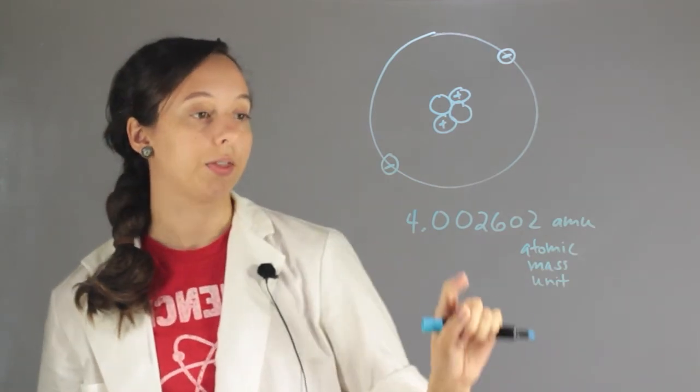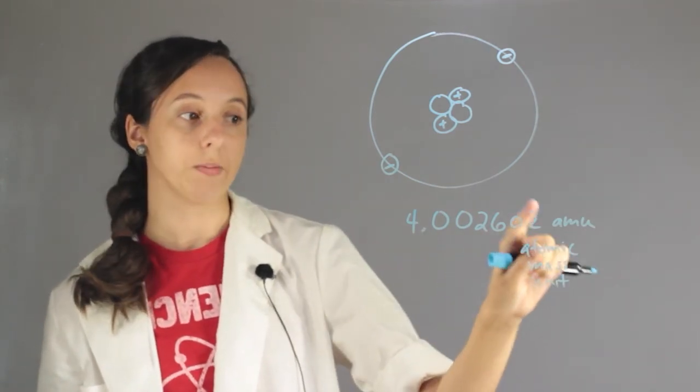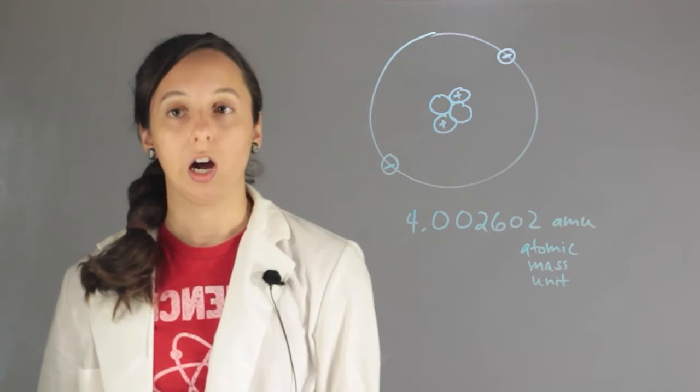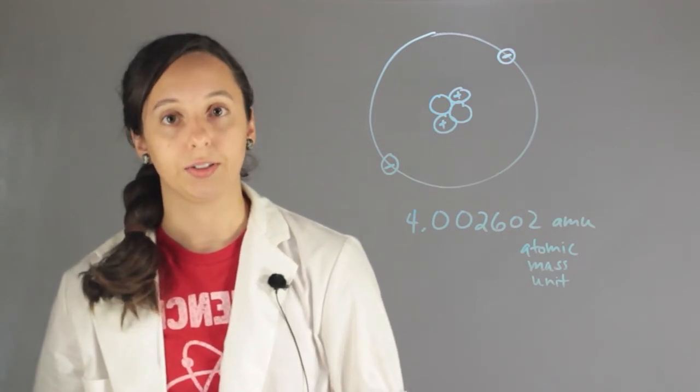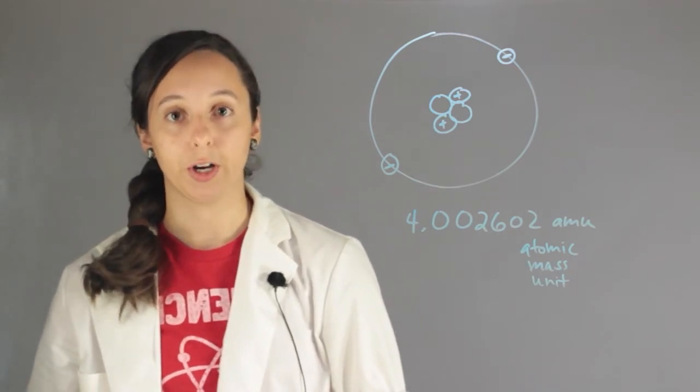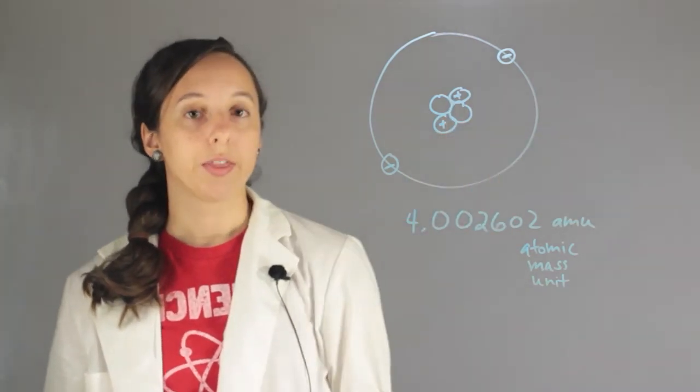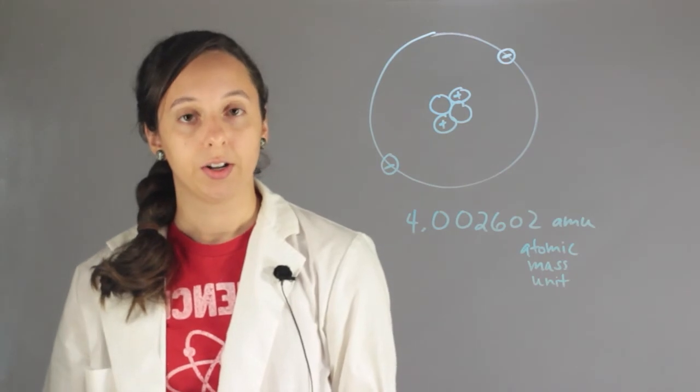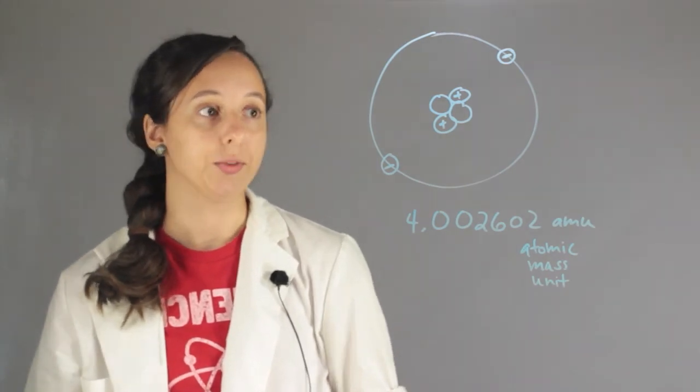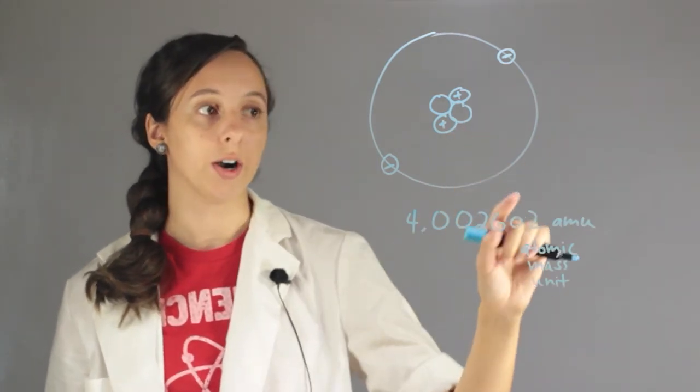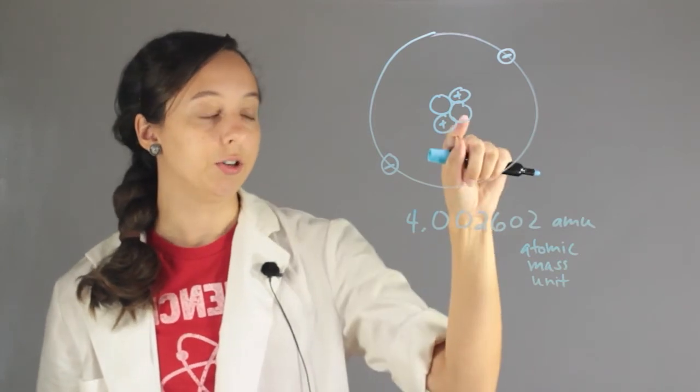So what's happening with this decimal and then these little numbers over here? Well, our atomic mass incorporates the different masses of our different isotopes. So remember, even though the number of protons, the number of electrons is set, the number of neutrons can fluctuate. So you can have different isotopes with atoms that have three or even four neutrons in helium.